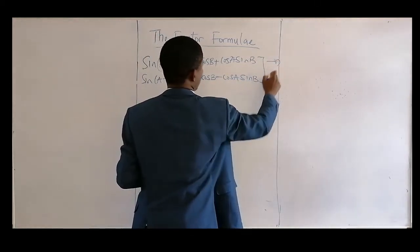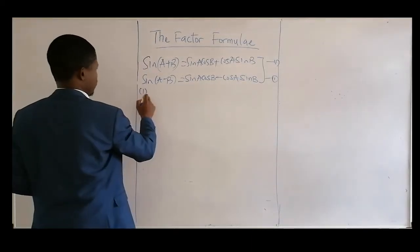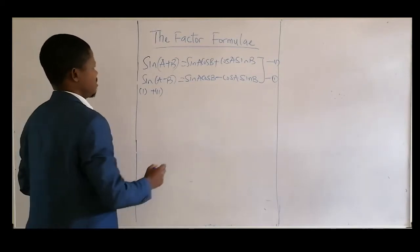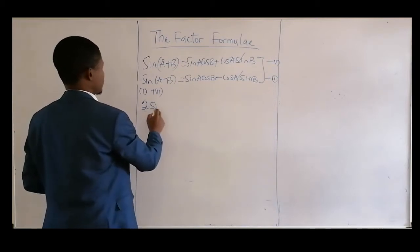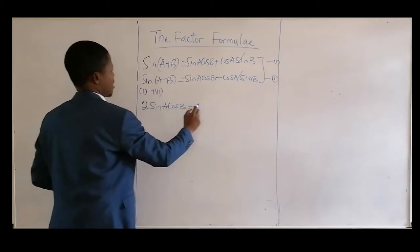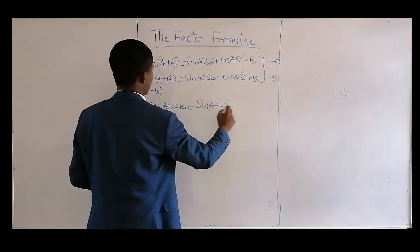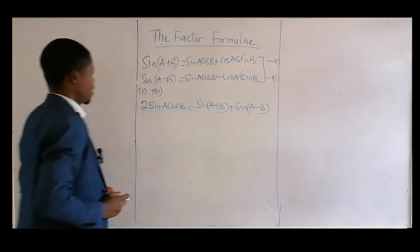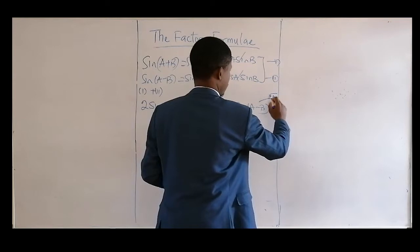Call these equations one and two, and see how we do the addition. If you add them together, some terms cancel out, and we get: 2 sine A cos B equals sine(A + B) plus sine(A − B). Call this equation A — we'll make reference to that.